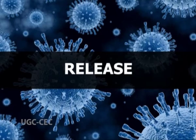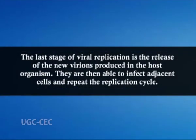Now we will come to release. The last stage of viral replication is the release of new virions produced in the host organism. They are then able to infect adjacent cells and repeat the replication cycle. Viruses can be released from the host cell by lysis — a process that kills the cell by bursting its membrane and cell wall if present. This is a feature of many bacterial and some animal viruses. Some viruses undergo a lysogenic cycle where the viral genome is incorporated by genetic recombination into a specific place in the host chromosome. The viral genome is then known as the provirus, or in the case of bacteriophages, the prophage.